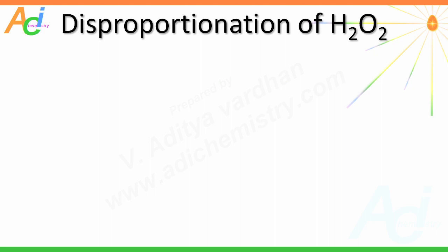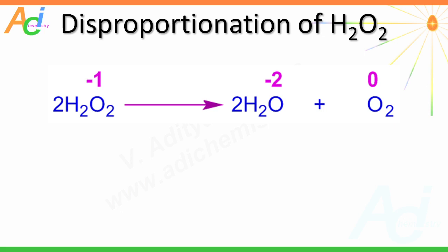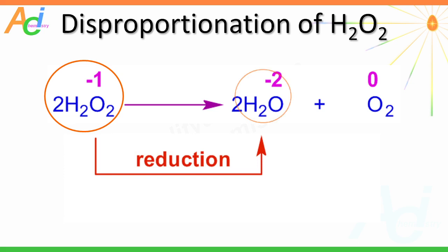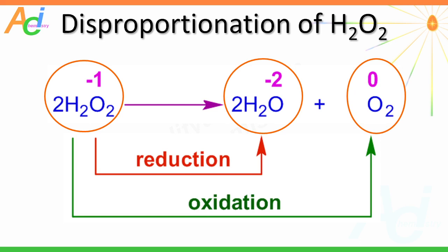Hydrogen peroxide, as shown on the screen, undergoes disproportionation to give water and dioxygen molecules. In this reaction, hydrogen peroxide is reduced to water — the oxidation number of oxygen decreases from –1 to –2. And at the same time, hydrogen peroxide is oxidized to give the dioxygen molecule, in which the oxidation number increases to 0.